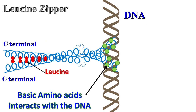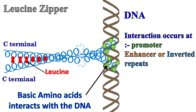The interaction of leucine zipper proteins with the DNA occurs at the promoter region, enhancer region, or the region with inverted repeats. This interaction usually regulates the process of transcription.